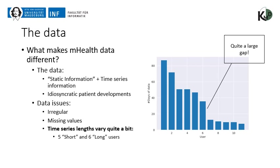The chart on the right shows the number of days of data contributed by different users, sorted in descending order. What makes mHealth data distinctive is that, apart from time series, we also have extra information about the patient — such as age, gender, the nature of the disease, or the severity when they joined the platform. From previous experience, we also know that patients sometimes develop in idiosyncratic ways, meaning they are best predicted using their own data.